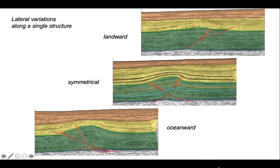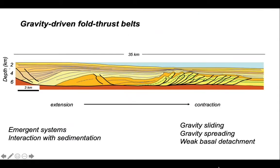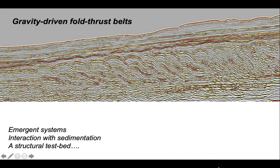We can learn a lot about thrust systems using these submarine gravity-driven fold thrust belts. They're emergent and interact with sedimentation, which means we can look at timing and relative activity of systems. Some develop by gravity sliding, others by gravity spreading, but they're unified by the need for a weak basal detachment — in all our examples this has been over-pressured mud, though salt can play the same role. We rely on seismic data rather than outcrop geology, but the seismic quality is usually excellent, making these systems a test bed for exploring structural evolution in thrust belts and understanding how thrust systems interact with sedimentation.